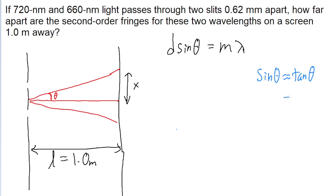If we assume that we can replace sine theta with tangent of theta, then if we look at the diagram we drew, we can see that the tangent of theta, remember that tangent is opposite over adjacent, is equal to the x variable divided by L. So our interference equation becomes D multiplied by x divided by L equals m lambda.